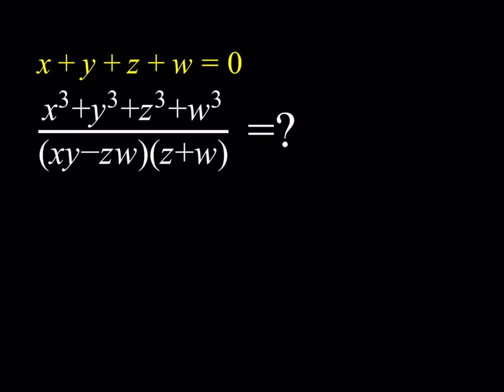Hello everyone, in this video we're going to be evaluating an expression. If you like this video, please comment, like, and subscribe, and hit the bell button for notifications. Let's get started. So we're given x + y + z + w = 0, and we're supposed to evaluate (x³ + y³ + z³ + w³) divided by the quantity (xy - zw) multiplied by the quantity (z + w).